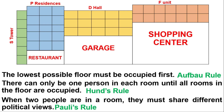Let's apply the rules. Afbal says first floor first. According to Hund's rule, each room must be occupied before doubling up. According to Polly's rule, two occupants must share different political views — first a Democrat, then a Republican. We then go to the second floor, then the second floor of the P Residences. After the third floor of the P Residences, you go back to the S Tower for the fourth floor. Since the D Hall is closest to the fourth floor of the S Tower, it is occupied first — and remember, its floor number is always minus one, so it becomes the third floor in the D Hall.